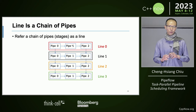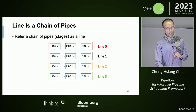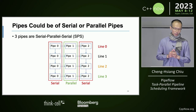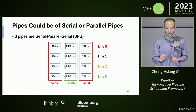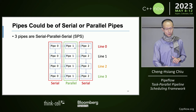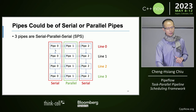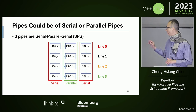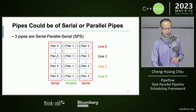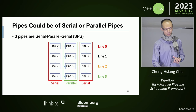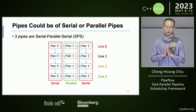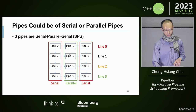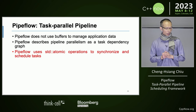In the graph, Pi0 is the washer, Pi1 is the dryer, and Pi2 is the closet. The dryer cannot start until the washer is finished, so there is an edge from washer to dryer. Pipes can be serial or parallel. Pi0 and Pi2 are serial pipes, while Pi1 is a parallel pipe. A serial pipe has vertical dependencies — Pi0 at line 1 cannot execute until Pi0 at line 0 finishes. A parallel pipe can run in parallel as long as its dependency from the previous stage is resolved.